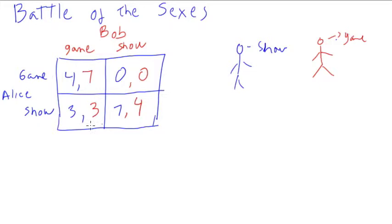If they both go to the one they like but now they're separate—because Alice is at the show and Bob is at the game—they both get 3, because at least they got to see the show or the game. And over here they go to the exact opposite of what they like and they get zero. So let's look at what are the equilibrium solutions.